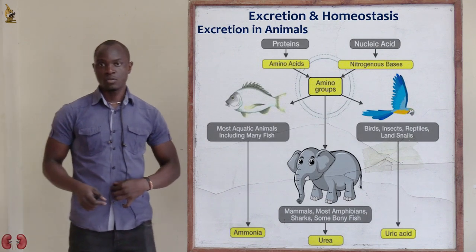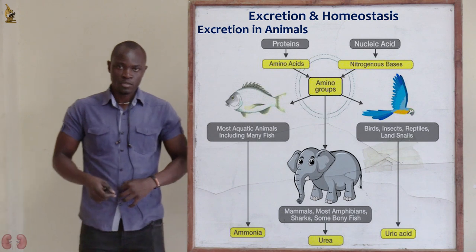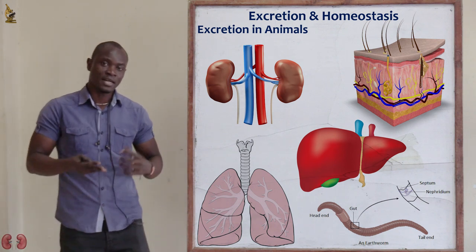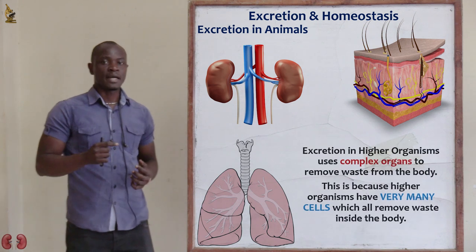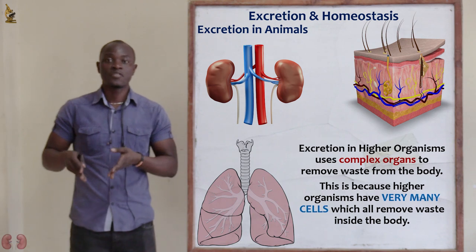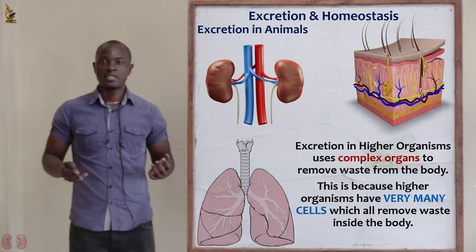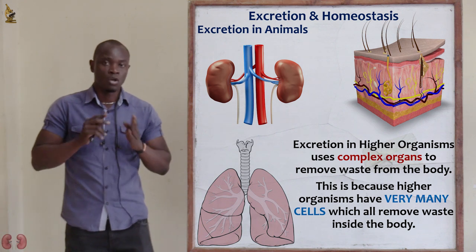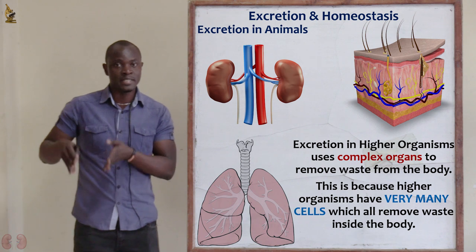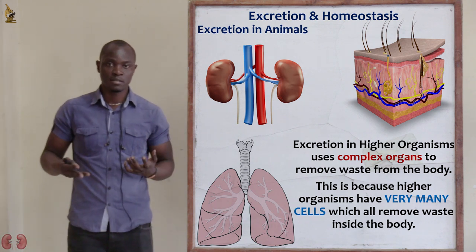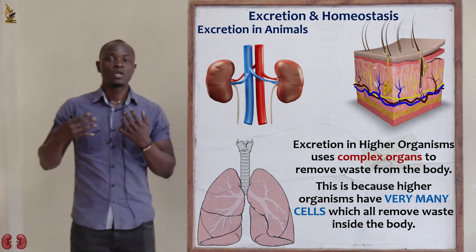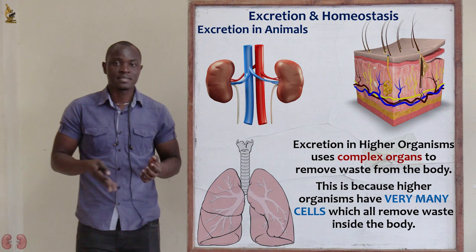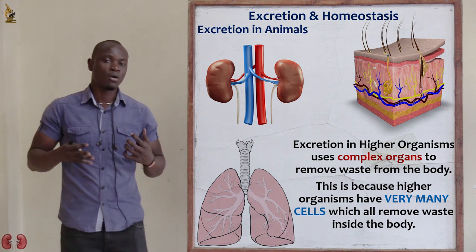Let's look at excretion in animals — how does excretion take place in animals? In animals, excretion is mainly carried out by an elaborate system made up of specialized tissues, organs, and cells. Most animals are higher organisms, meaning they are multicellular, and therefore a whole organism must use a complex excretory system in order to eliminate all the waste products from the body.